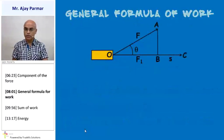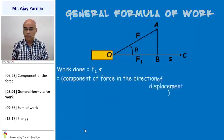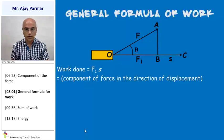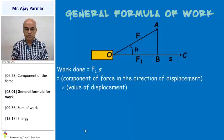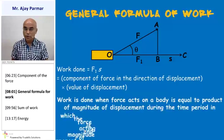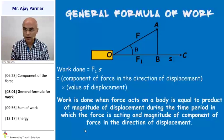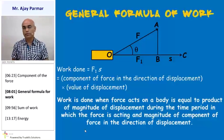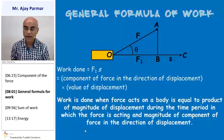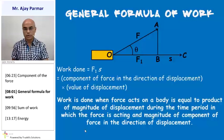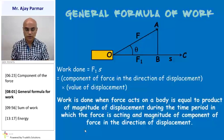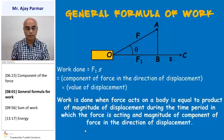Now we can obtain the general formula for work: W = F1 × S, where F1 is the component of force in the direction of displacement, and S is the magnitude of displacement. Work is defined as the product of the magnitude of displacement and the magnitude of the component of force in the direction of the displacement.